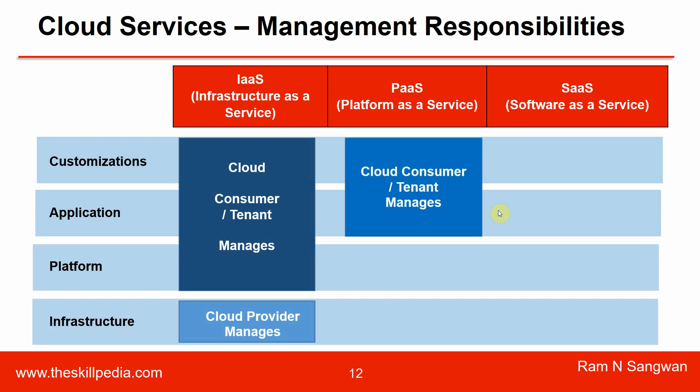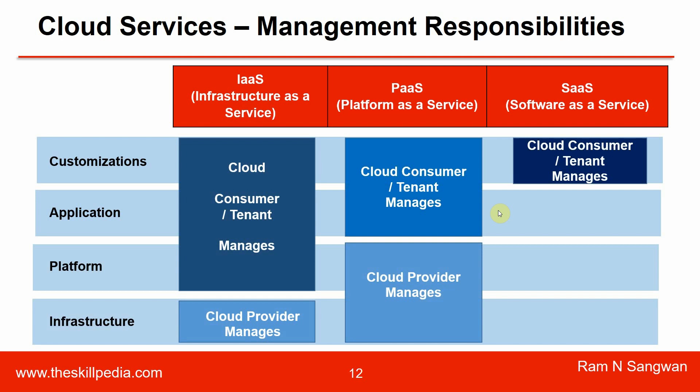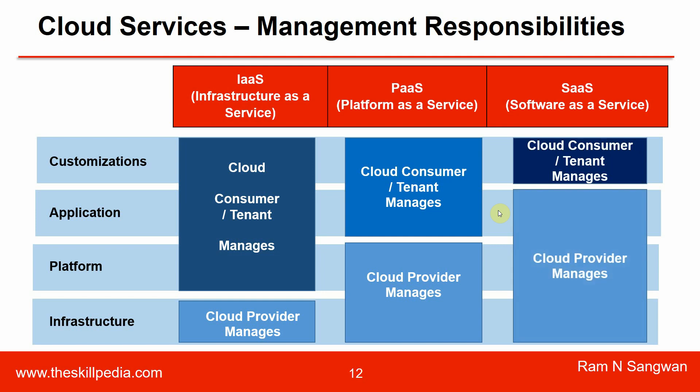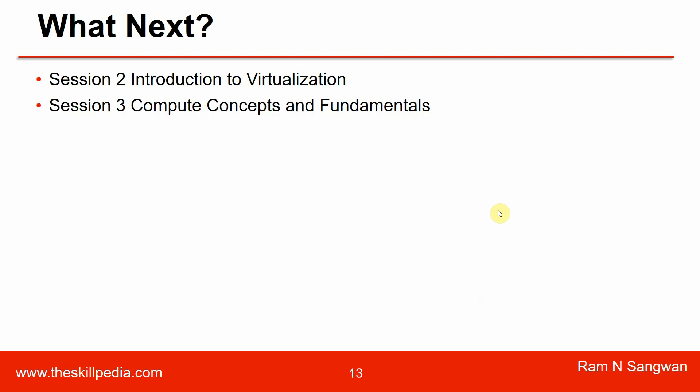In Platform as a Service, platform and infrastructure are the responsibility of the provider, whereas customizations and application are the responsibility of the customer. In Software as a Service, only customization is the customer's responsibility, while infrastructure, platform, and application are the responsibility of the cloud provider. This division defines who manages what in the cloud.